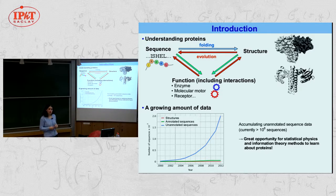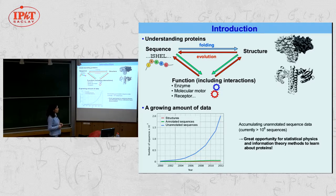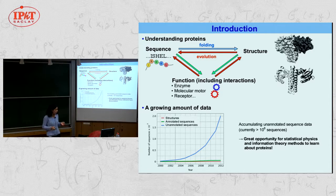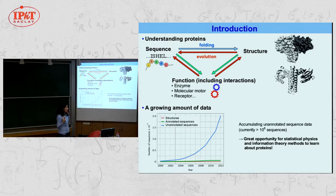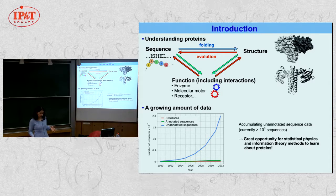Currently, there is a growing amount of sequence data available. You can see the number of sequences over time — the growth has continued to this day, with more than 10^8 sequences. But most are unannotated, meaning we do not know much about them. In green are the annotated sequences for which we have some idea of the function; in red, those for which we know the 3D structure from experiments such as X-ray crystallography. They are far fewer and grow far less fast, leaving us facing this huge amount of unannotated data.